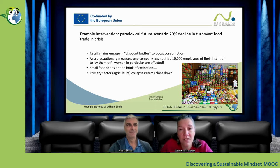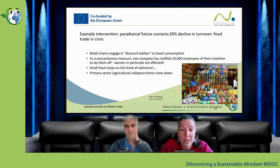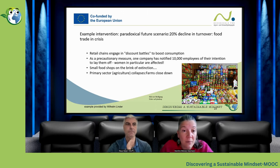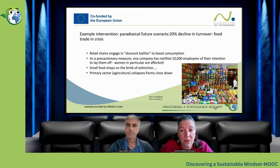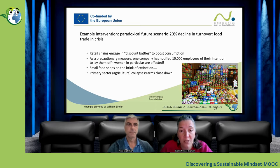We created a paradoxical future scenario and said that a 20% decline in turnover is caused if there is no more food waste. So what does it mean? If we say we have no more food waste — the wonder has happened overnight — that would lead to discount battles to boost consumption, or we would have 10,000 employees lose their jobs, which affects women in particular because they often work part-time in the food sector. Then small shops are closing, small farms have to close down, and so on. If food is no longer wasted, we have a downside to it, which is paradoxical and not expected.